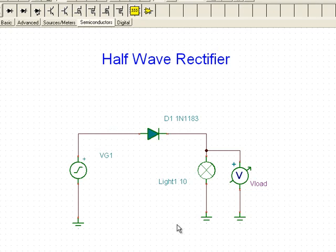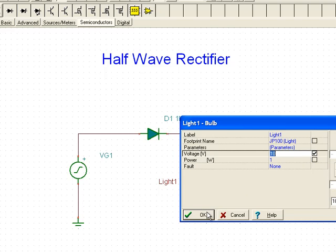We have a simple circuit here called a half-wave rectifier. It's going to take the alternating current from our source and convert it to a DC current at our load, which is a 10 volt light bulb with a wattage rating of 1 watt.